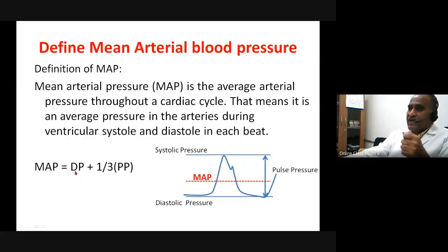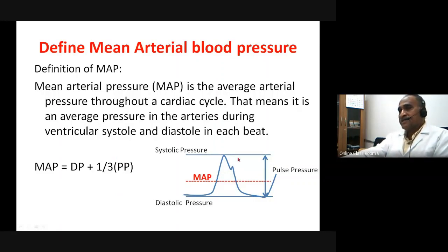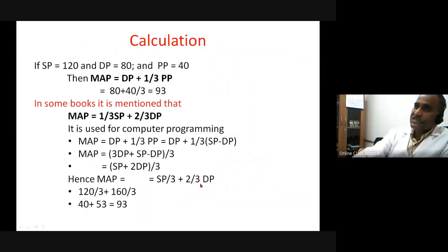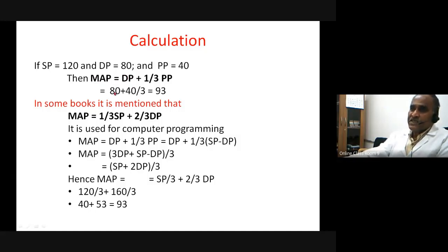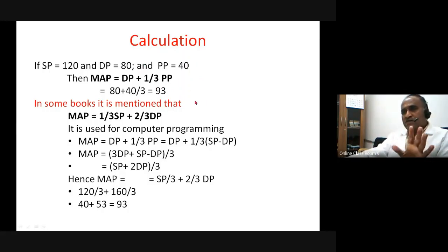To calculate the mean arterial pressure: MAP equals diastolic pressure plus one-third of the pulse pressure. If we take the area under the curve, the mean arterial pressure equals diastolic pressure plus one-third pulse pressure. For example, if systolic pressure is 120 mmHg and diastolic pressure is 80 mmHg, the pulse pressure is 40 mmHg. Then MAP equals 80 plus 40 divided by 3, which gives 93 mmHg.